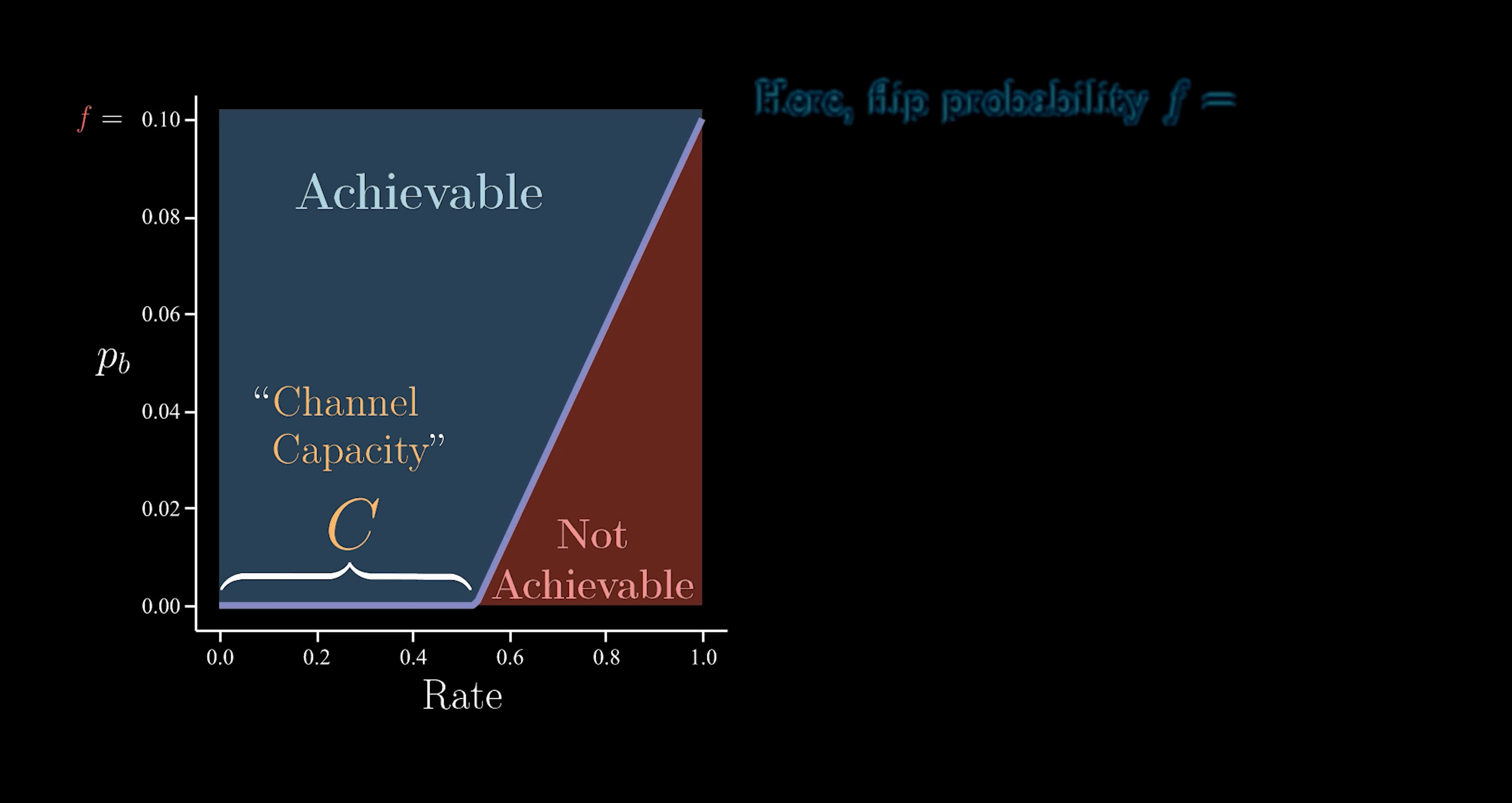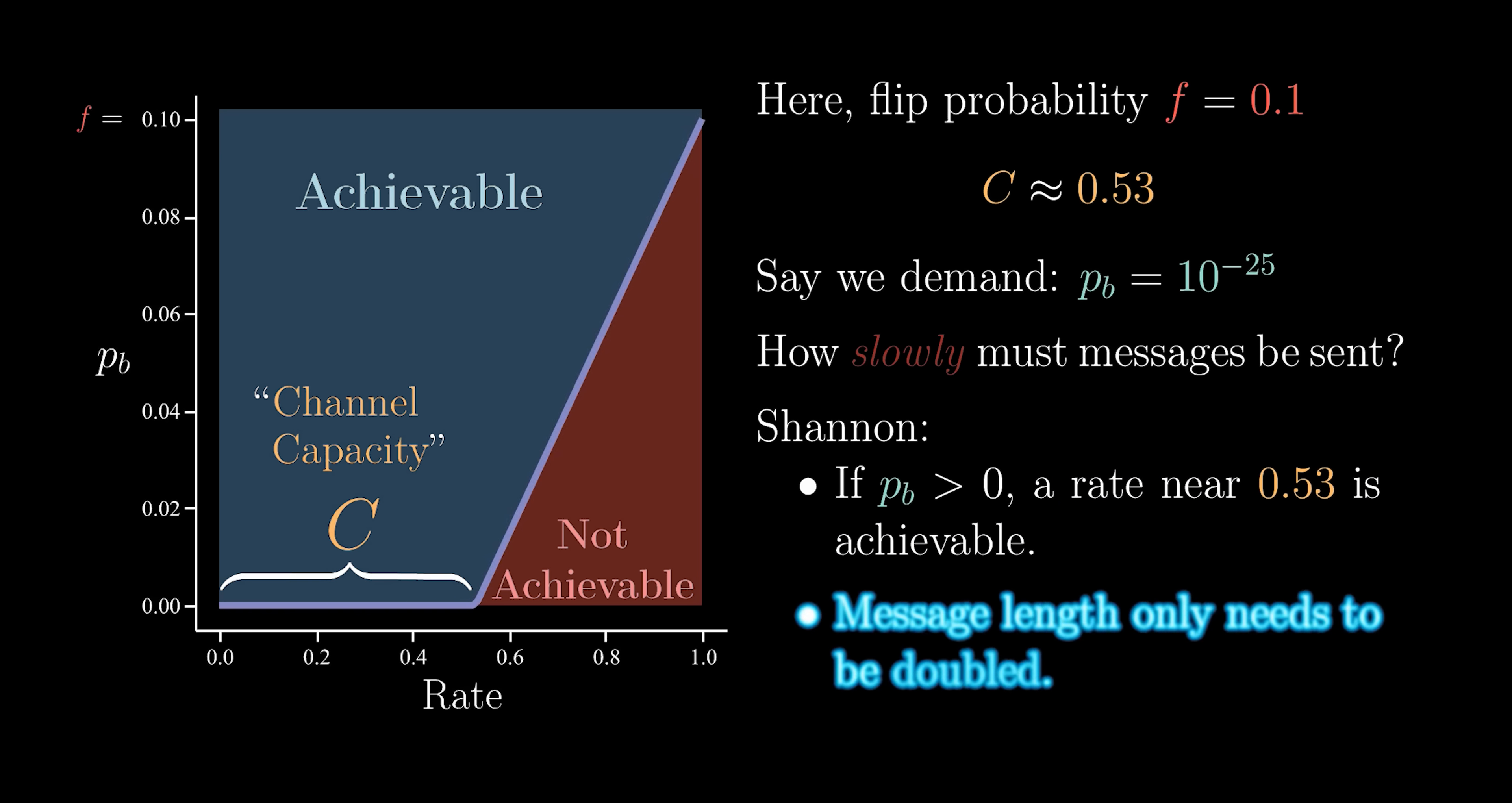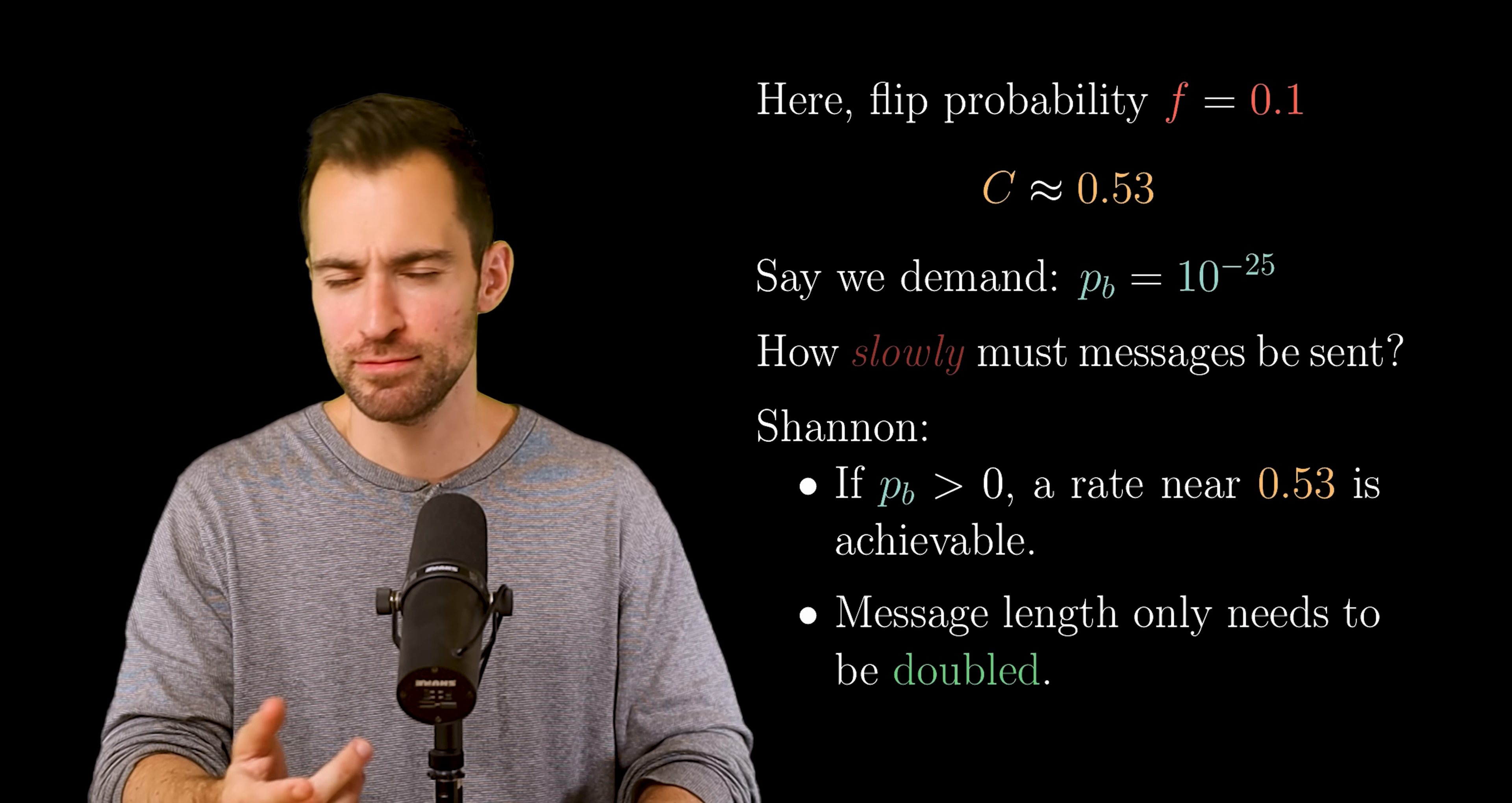Consider our example with flip probability 0.1. That means the capacity is about 0.53, which comes from an entropy calculation, which I won't get into. Okay. Now suppose we make the ridiculous demand of a bit error probability of 10 to the minus 25, an extremely small number. How slow will we have to send our messages? Shannon says, hey, as long as it's not zero, there are coding strategies out there that will get you up to a rate of 0.53. So you only need to double the message length. And then you say, wow, that's great. What's the coding strategy? And Shannon says, I don't know, but they're out there. You figure it out.